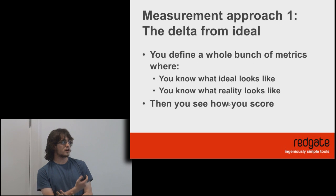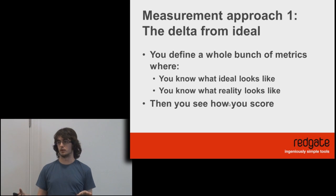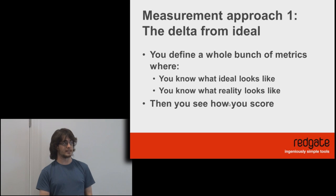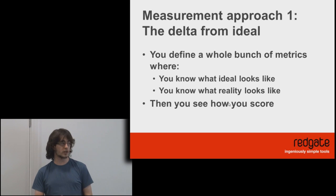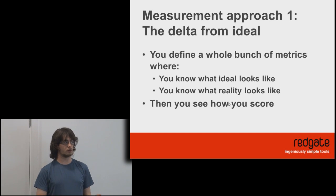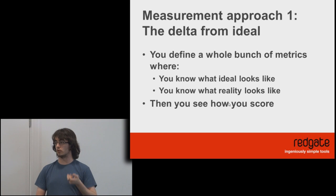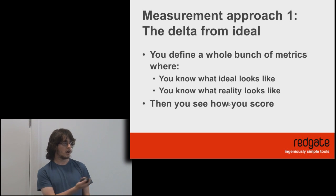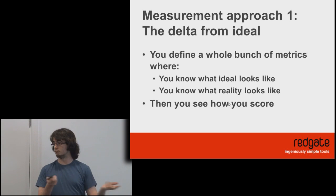The talk is based around two measurement approaches. The first one is the delta from ideal. Basically, you define a whole bunch of metrics where you know what the ideal looks like, then you look at your code and see what you're currently scoring on that metric and see where you are.